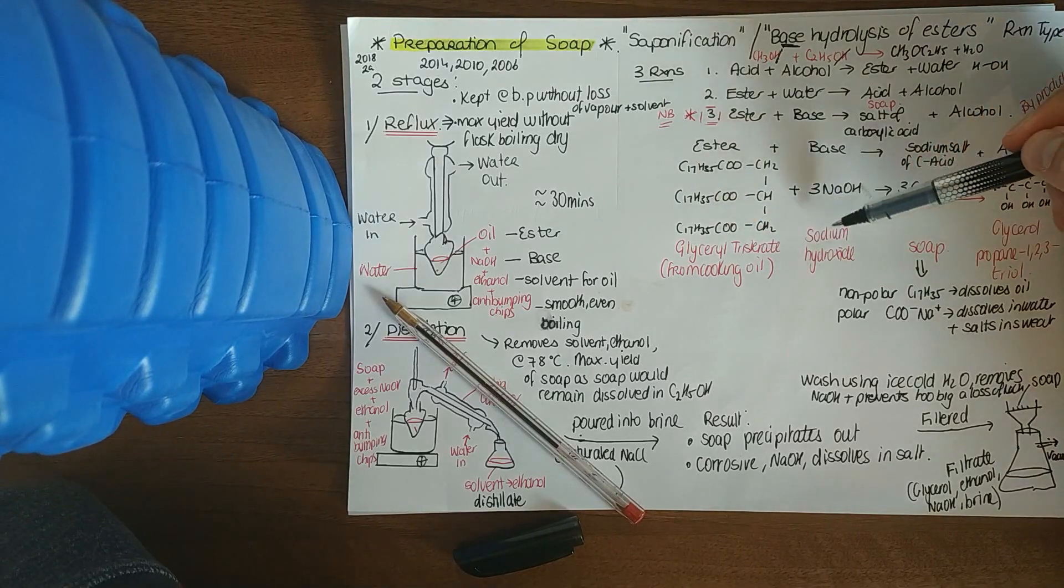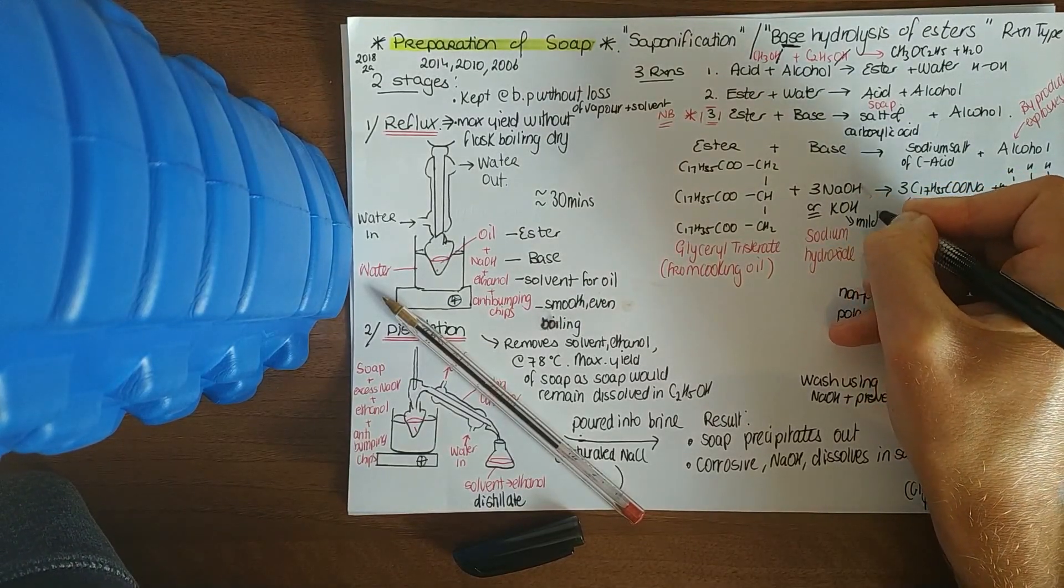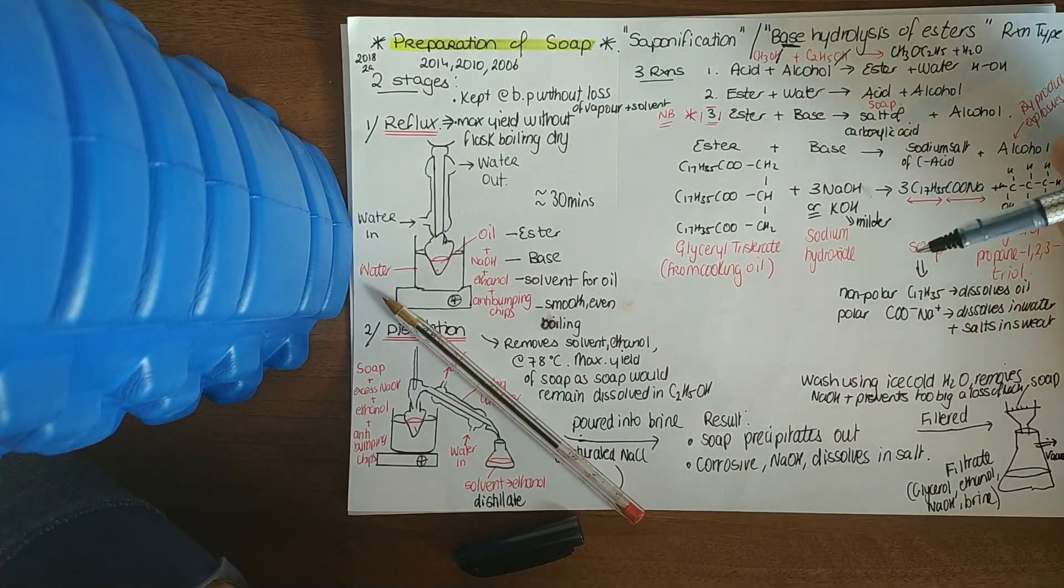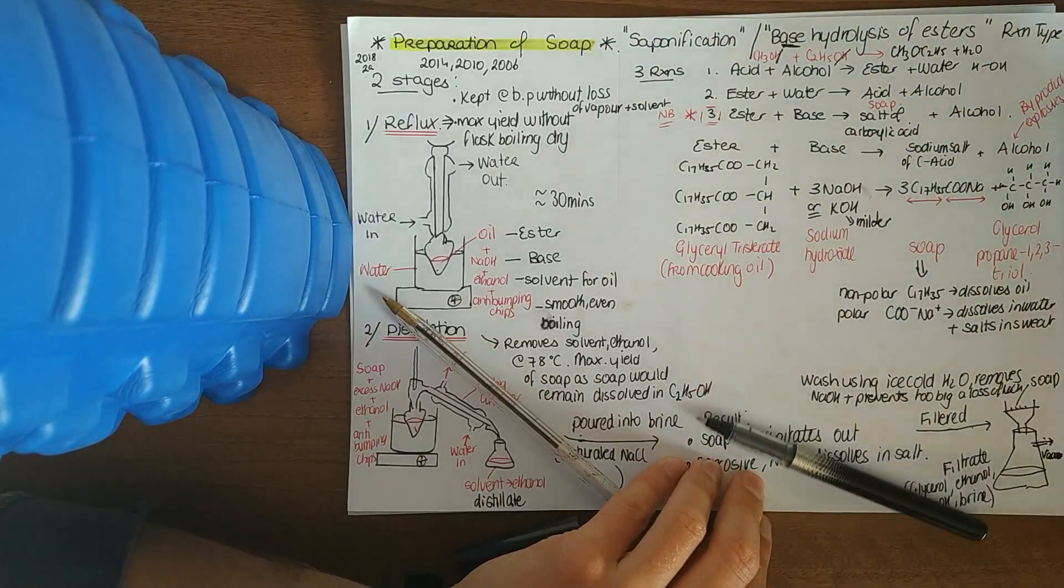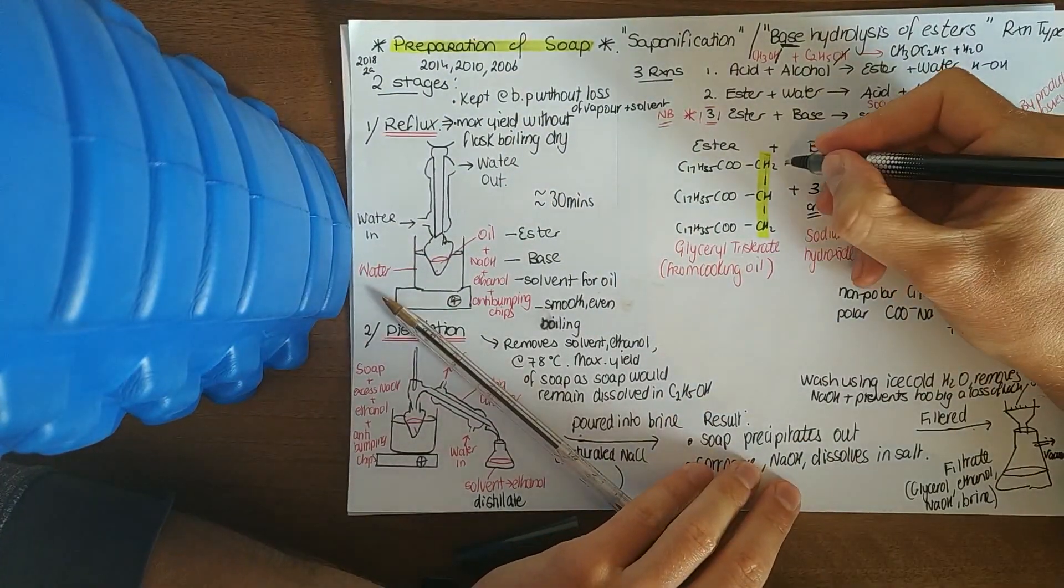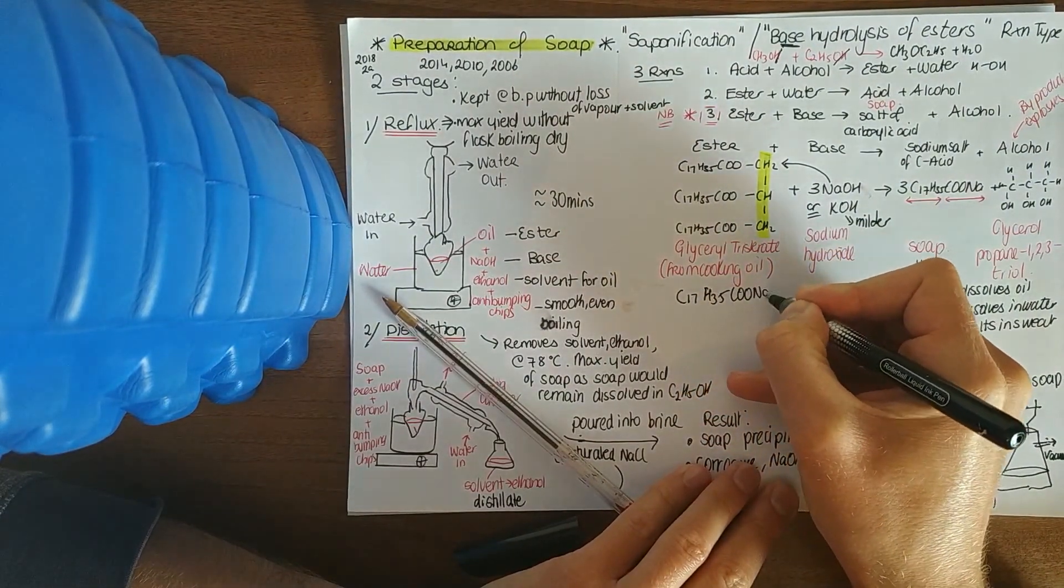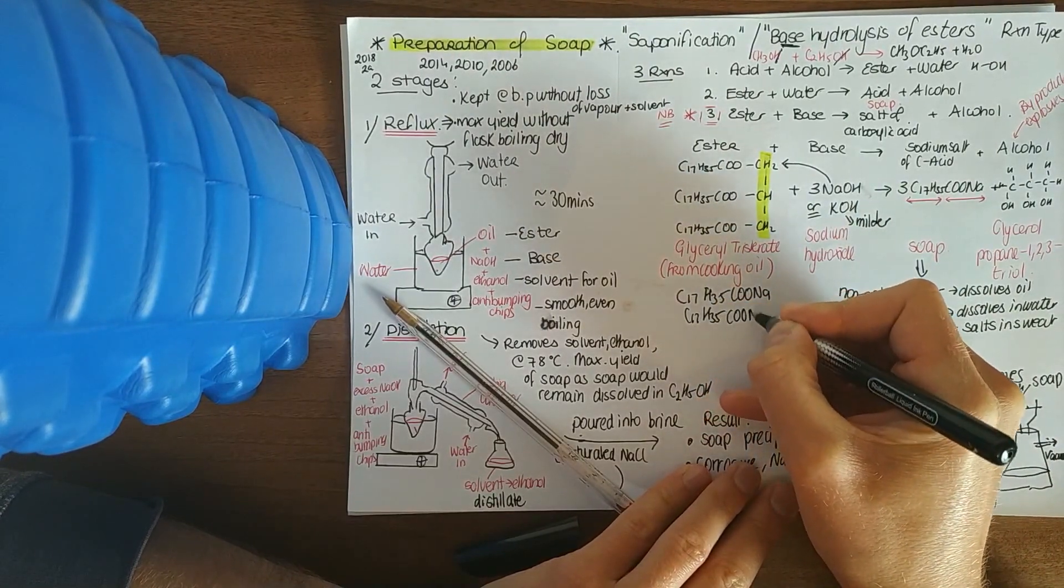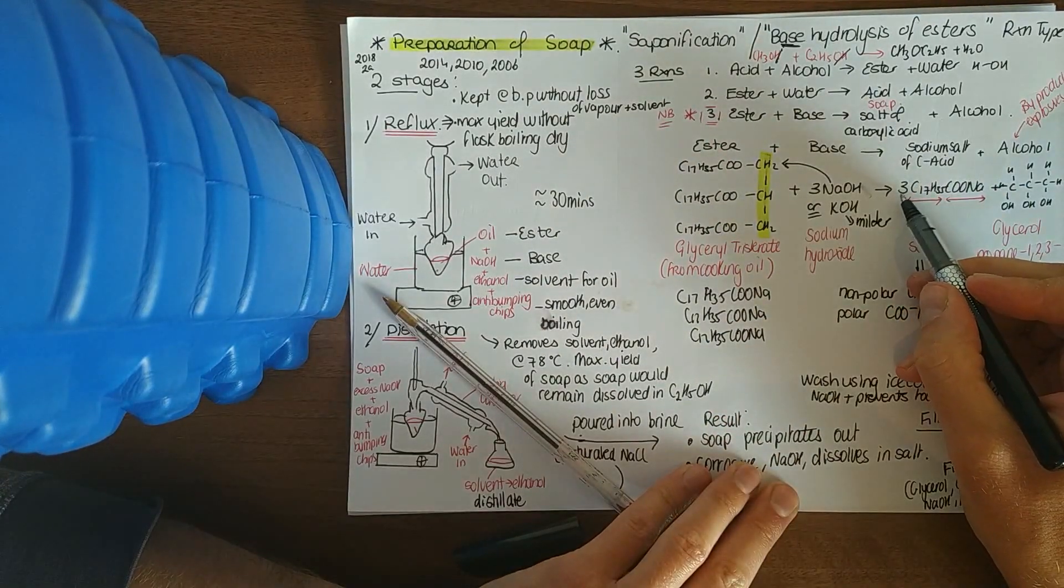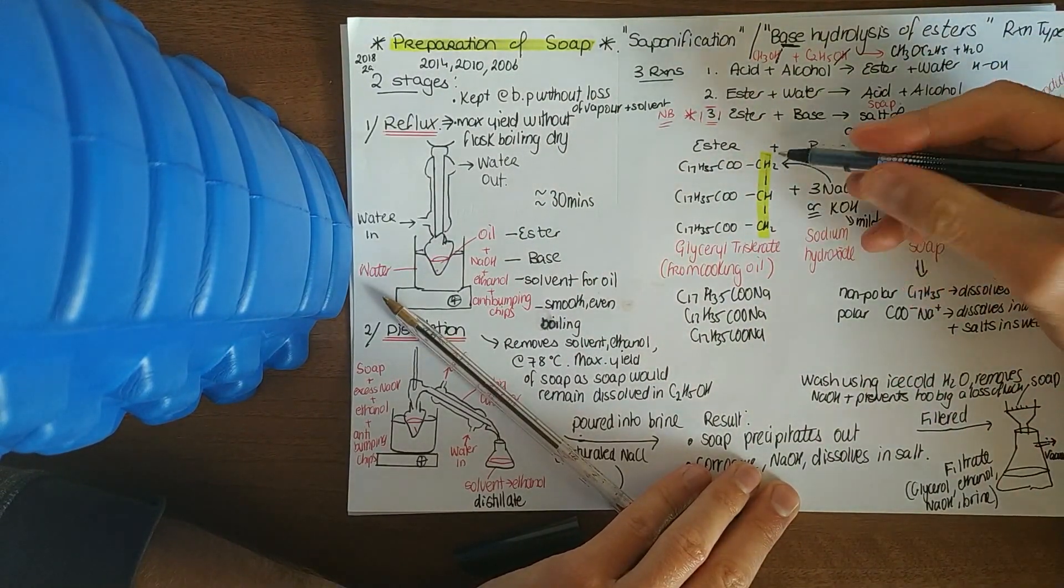Then you add in your base, maybe sodium hydroxide or potassium hydroxide which is milder. They may ask you for an advantage of potassium hydroxide - it's milder on the skin. All that happens here, this ending bit gets taken off and your Na or your K swoops in. So you'll have C17H35CONa three times, and that's why it's easier just to write the three in front of it. Your Na has replaced these groups.